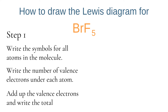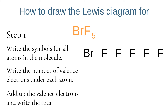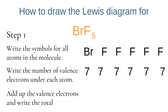For our next example, we are going to look at BrF5. Again, the first step is to write the symbols for all atoms in the molecule and place the number of valence electrons under each atom. We then add up the total number of valence electrons. For BrF5, we have 42 electrons that we need to include in our Lewis diagram.